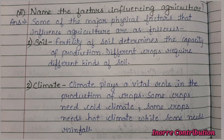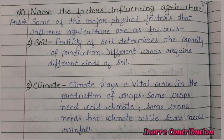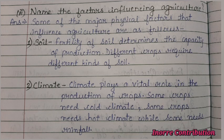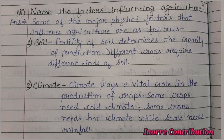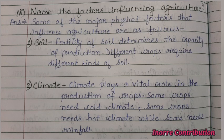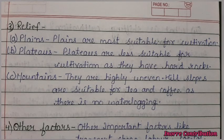Second question: Name the factors influencing agriculture. Some of the major physical factors that influence agriculture are: first, soil — fertility of soil determines the capacity of production, and different crops require different kinds of soil. Second, climate — climate plays a vital role in the production of crops; some crops need cold climate, some need hot climate, while some need rainfall.